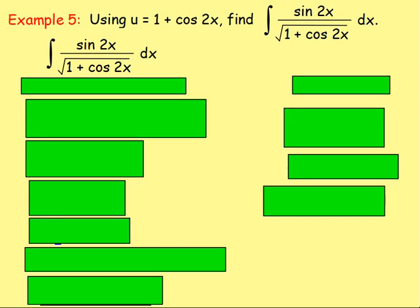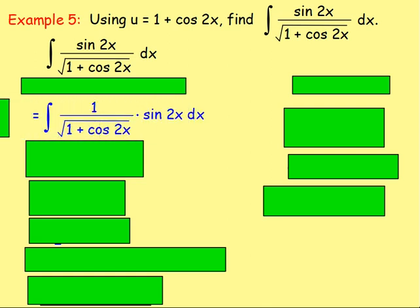Example 5: using u equals 1 plus cos 2x, find the integral of sin 2x over the square root of 1 plus cos 2x with respect to x. The first thing we want to do is, thinking u is equal to 1 plus cos 2x, you may wish to imagine this as 1 over the square root of 1 plus cos 2x, and then take the sin 2x to the side — so imagine it as 1 over the square root of 1 plus cos 2x, times sin 2x dx.